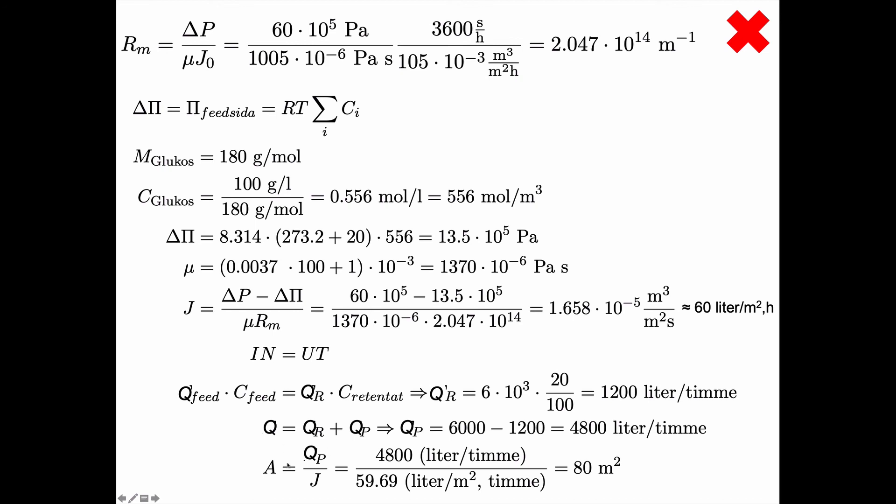It's the permeate that we are interested in, right? So the permeate in liters per hour is 4800 and we calculated that you get 60 liters per square meter an hour or to be more exact 59.69 liter per square meter an hour, sorry for the Swedish there, and you get a required area of 80 square meters.